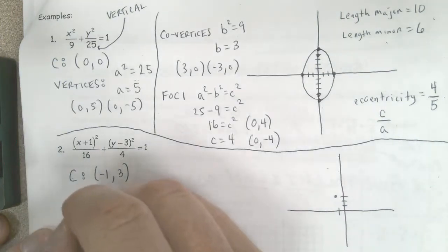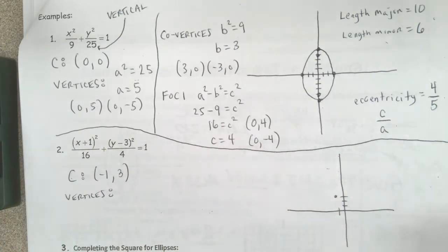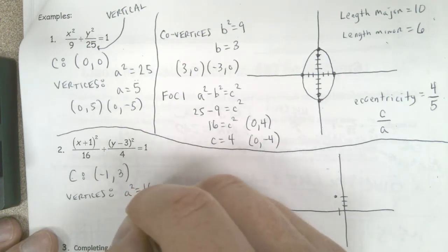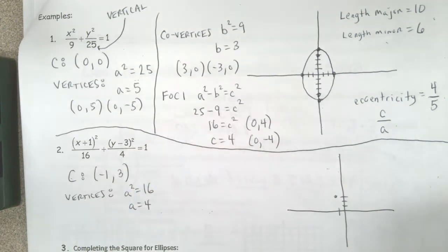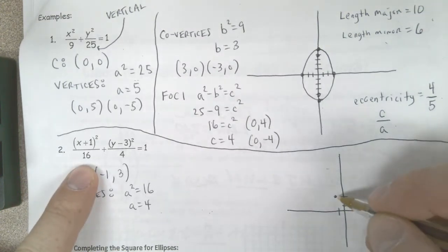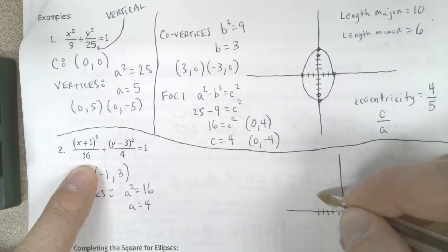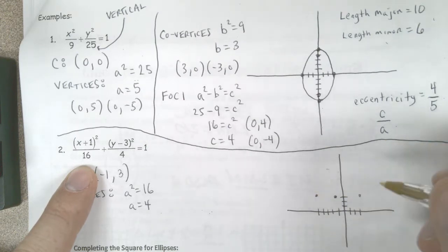I'm then going to go ahead and find my vertices. So my vertices here, we know that a squared in this case is equal to 16. So a is going to be 4. Now because it's horizontal, from this point I'm going to count right 4. I'm going to count left 4. And there's my vertices.